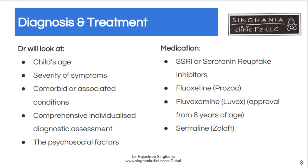The treatment is twofold. One is, of course, medications, which are given to children of eight years and above. The most commonly used is the SSRI, or serotonin reuptake inhibitor. Fluoxetine has been approved by the FDA for use in children, and this helps address the chemical nature of the disorder, as we know serotonin is affected in the circuits of the brain.